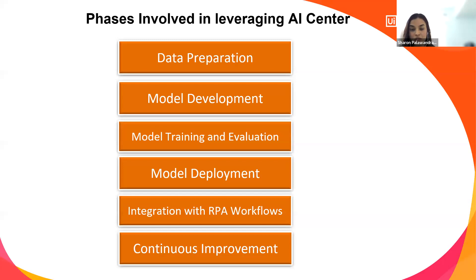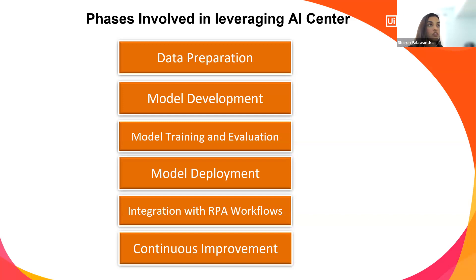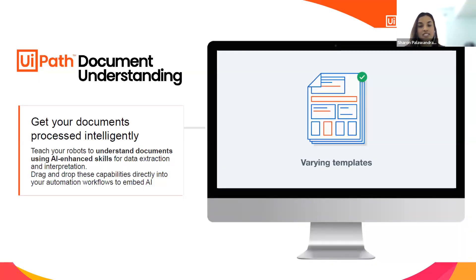Continuous improvement means that when the machine learning model is already deployed, it also has the capability to learn over time. You can reiterate and reevaluate the ML model and train it over time in your automation.